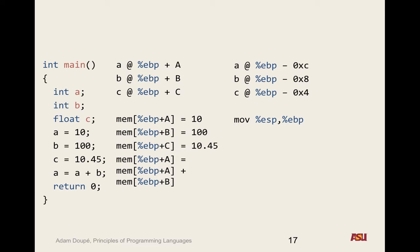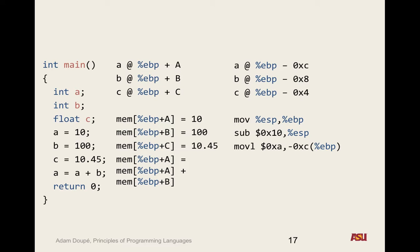The code first moves the stack pointer into EBP, re-establishing the base pointer. The stack pointer when it gets to main points somewhere in the stack. We want that EBP register — which we use to calculate all offsets — to point to wherever the stack currently is. Then we subtract 16 in decimal from the stack, moving the stack pointer down to make room for the local variables; otherwise we may end up overwriting them.